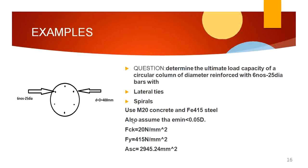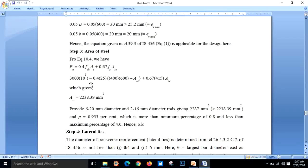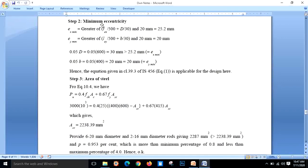Next problem: Determine the ultimate load carrying capacity of a circular column of diameter 400 mm reinforced with 6 numbers of 25 mm dia bars, with lateral ties as a spiral (helical reinforcement). Use M20 grade concrete and Fe415 steel. Assume minimum eccentricity is less than or equal to 0.05d, so there is no need to separately calculate minimum eccentricity.